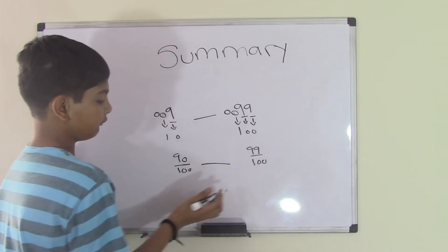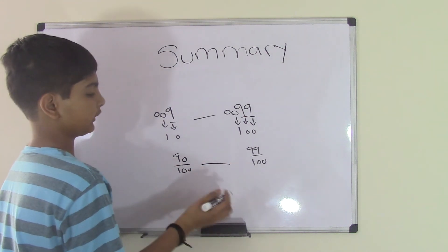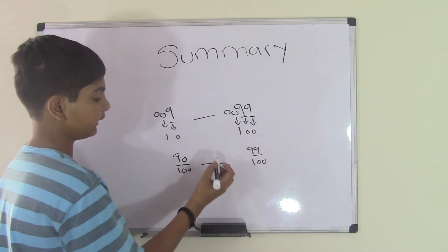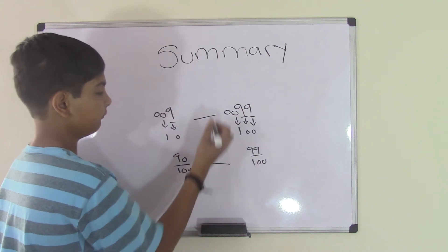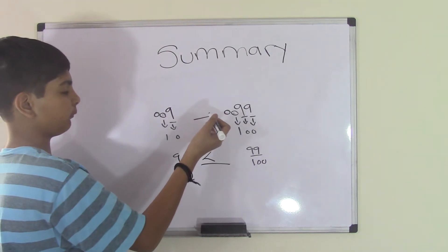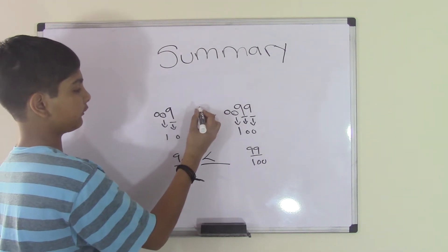We know that we cannot compare the 100 and 100th because they're the same numbers, but we can compare the 90 and 99. Therefore, 99 is greater. And to apply the same formula over here, 0.99 is greater than 0.9.